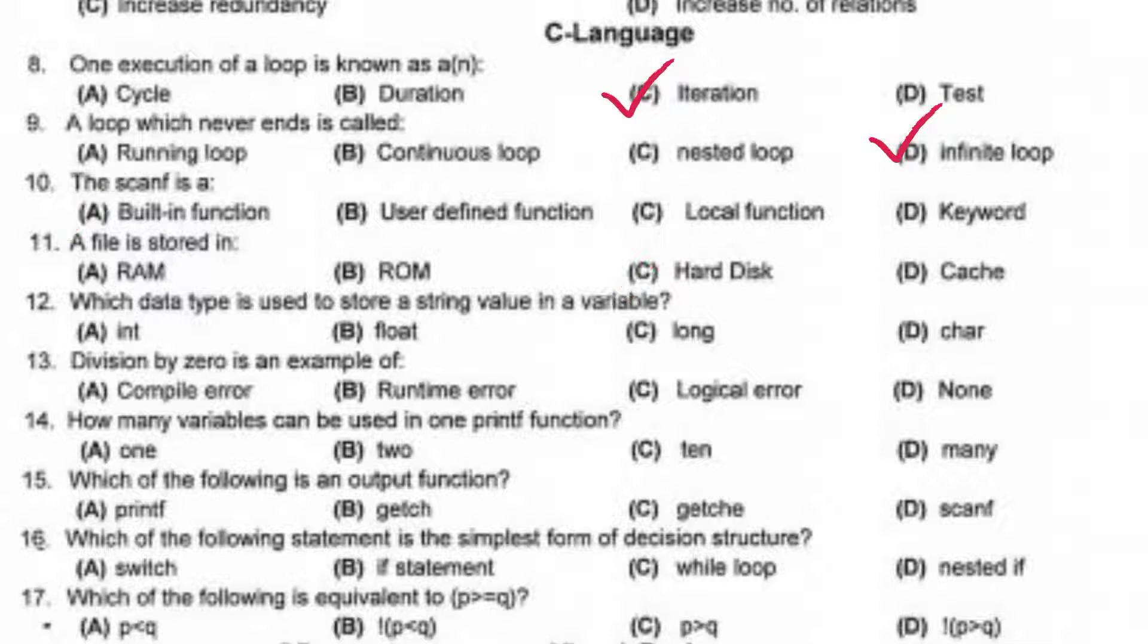Which data type is used to store a string value in a variable? Divide by zero is an example of runtime error.